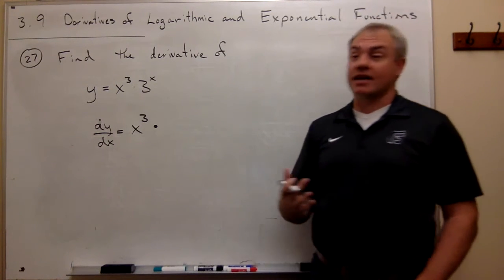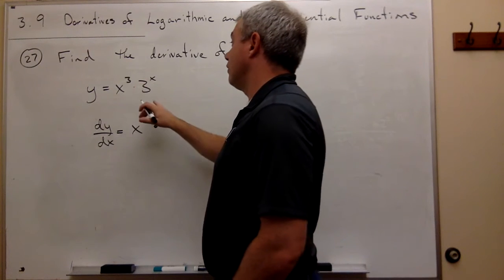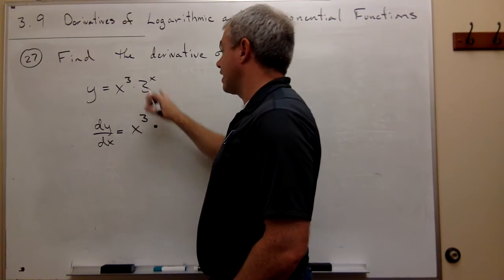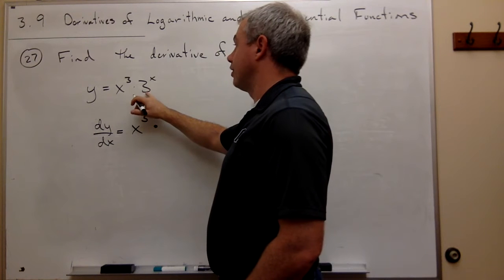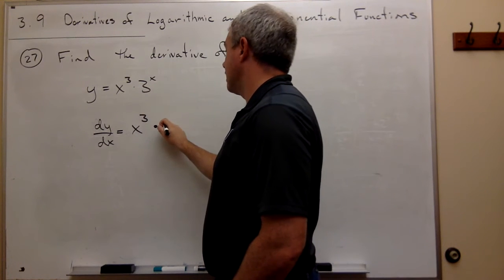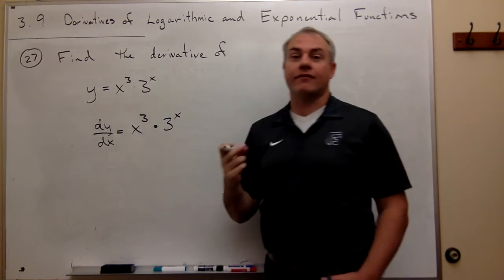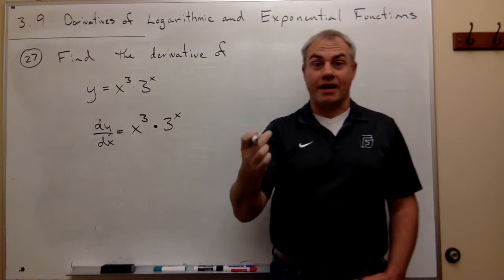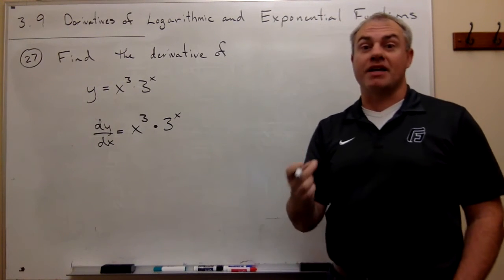But I treat it almost exactly the same. When I take the derivative of e to the x is e to the x. When I take the derivative of 3 to the x, it's 3 to the x. But then I have to remember to multiply by one extra thing because the base isn't e.